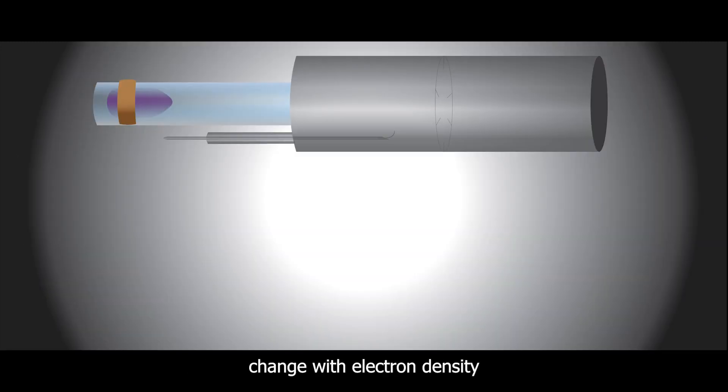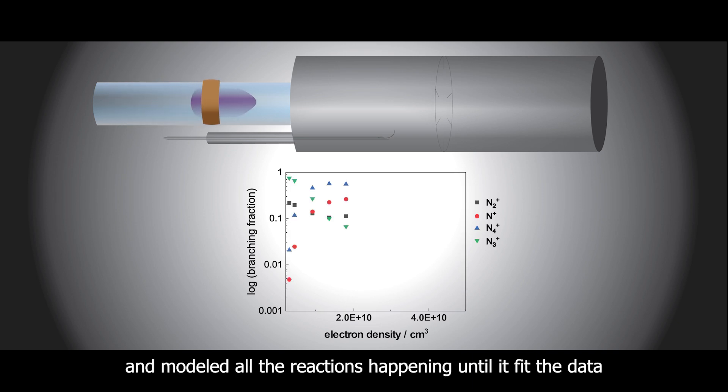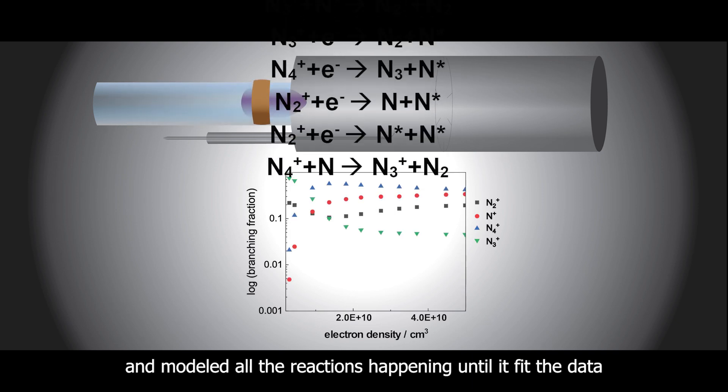So, we looked how the nitrogen species change with electron density and modeled all the reactions happening until it fit the data.